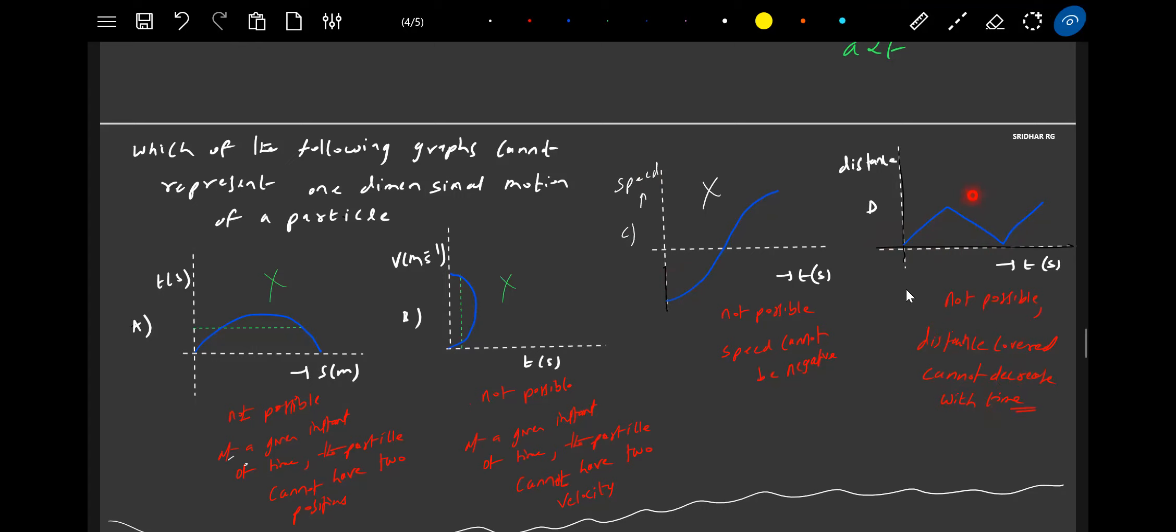Distance covered cannot decrease with time. So therefore, this graph - why it's wrong. We should also know how to interpret this. Because the distance covered with time will increase, it will never decrease. Here I'm showing it decreasing, so therefore this is ruled out.